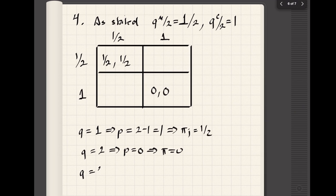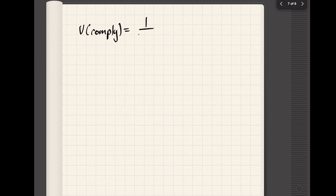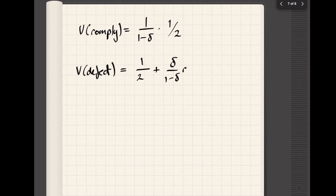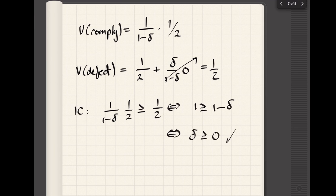Now if one of them produces one unit and the other one half, then the price would be two minus three halves, which is one half, and then the profits would be one half for whoever is producing more and one fourth for the person that's producing one half. Once you have the table, you do the same thing we did in class. The value for complying would be one over one minus delta times one half—you get one half forever. If you deviate, given this table, you would get one half on the first period, and then forever after you get zero. So our incentive constraint requires the first value to be greater than the second value, which is going to happen after some algebra if and only if the discount factor is nonnegative.